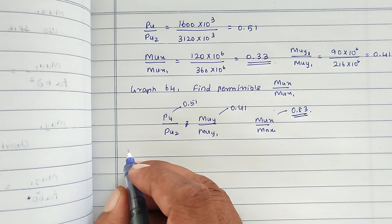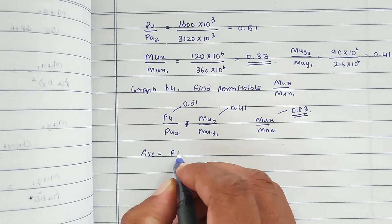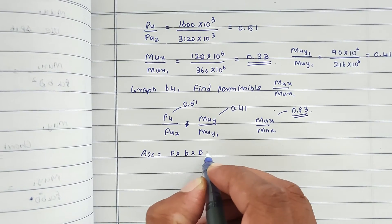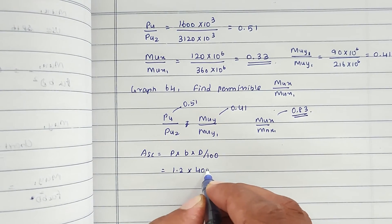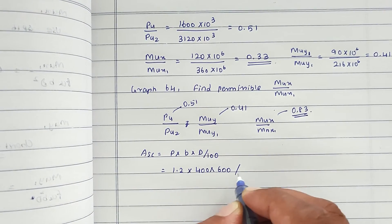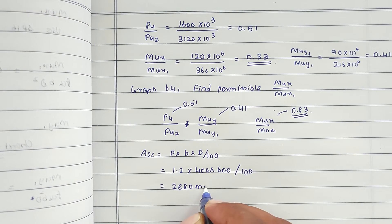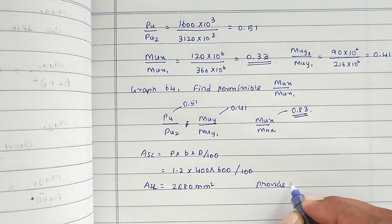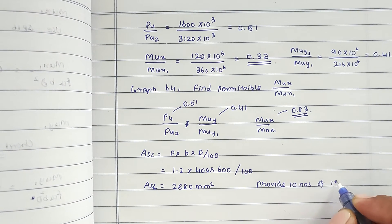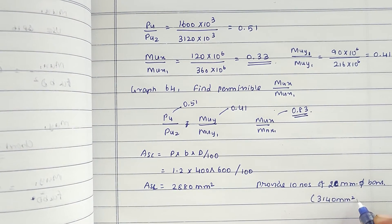Calculate ASC for main reinforcement: ASC = PT × B × D / 100 = 1.2 × 400 × 600 / 100 = 2880 mm². Provide 10 numbers of 20 mm dia bars, giving ASC = 3140 mm².